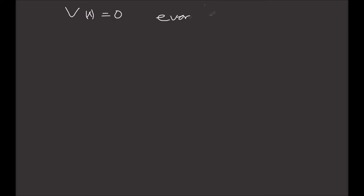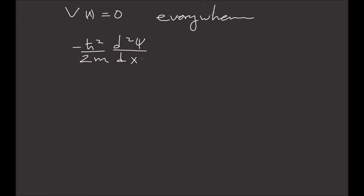Next, we're going to take a look at the Schrödinger equation with the potential energy equal to zero everywhere. We call this the free particle. So with the potential energy zero everywhere, the Schrödinger equation reads: minus h-bar squared divided by 2m, times the second derivative of psi over dx squared, equals E times psi.